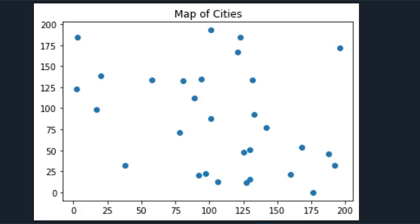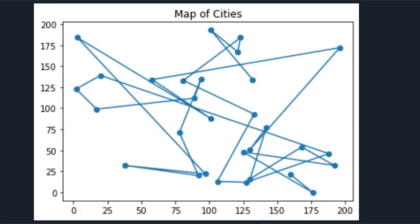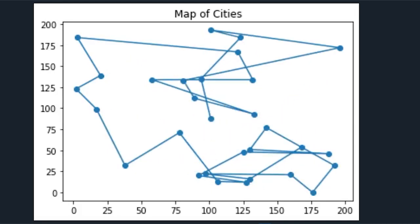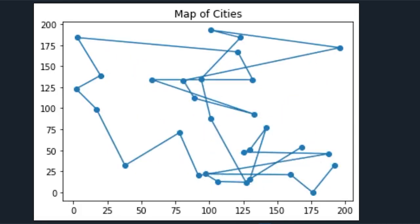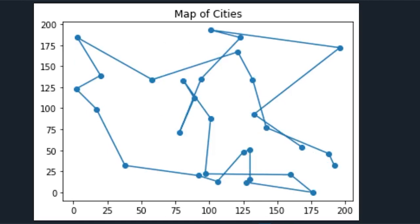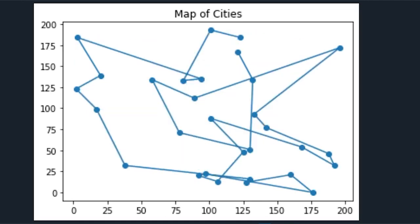Here is a map of 30 randomly generated points. Let's watch as the GA progresses through each generation and see the route get progressively better. As you'll notice at the beginning, the route is quite jumbled. This is because, at the start, it was essentially a random solution — not very good.